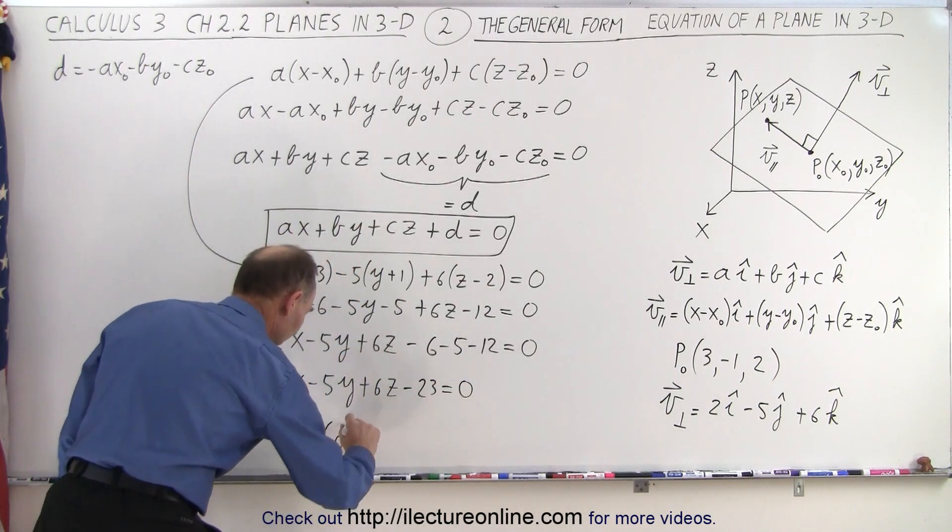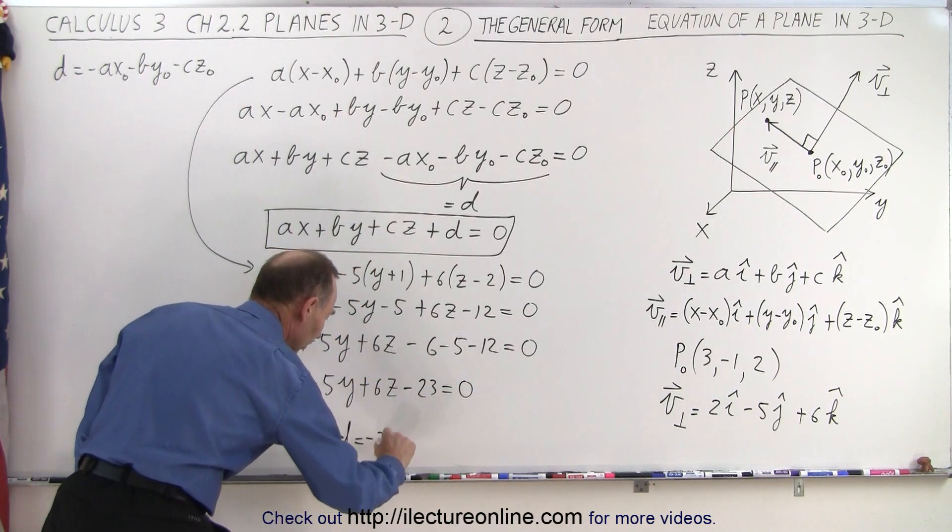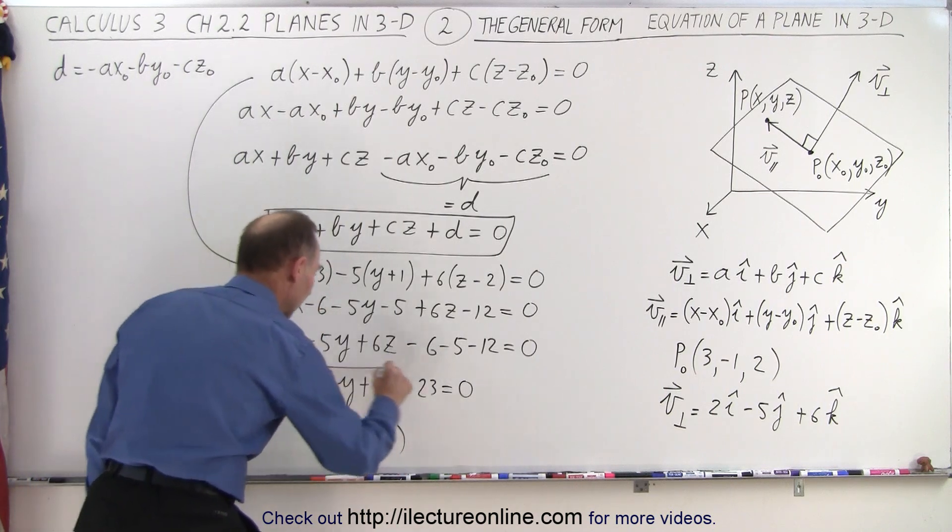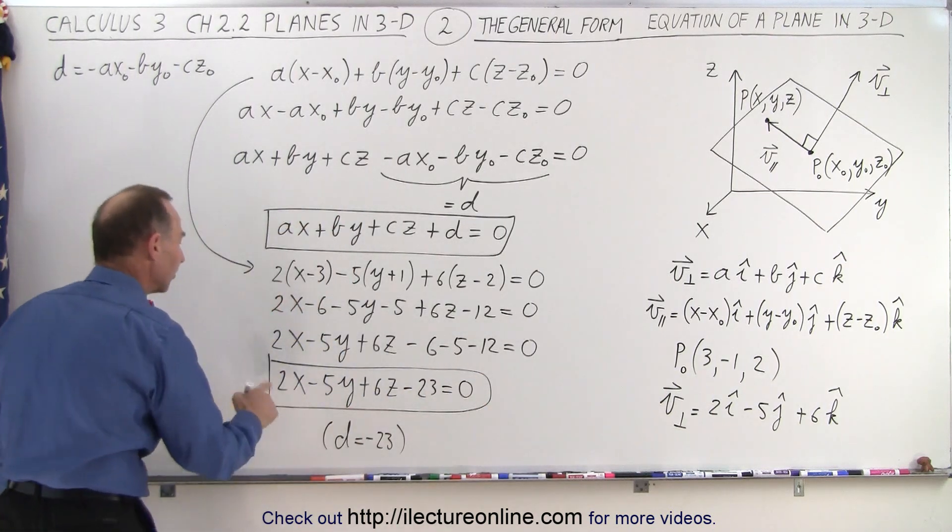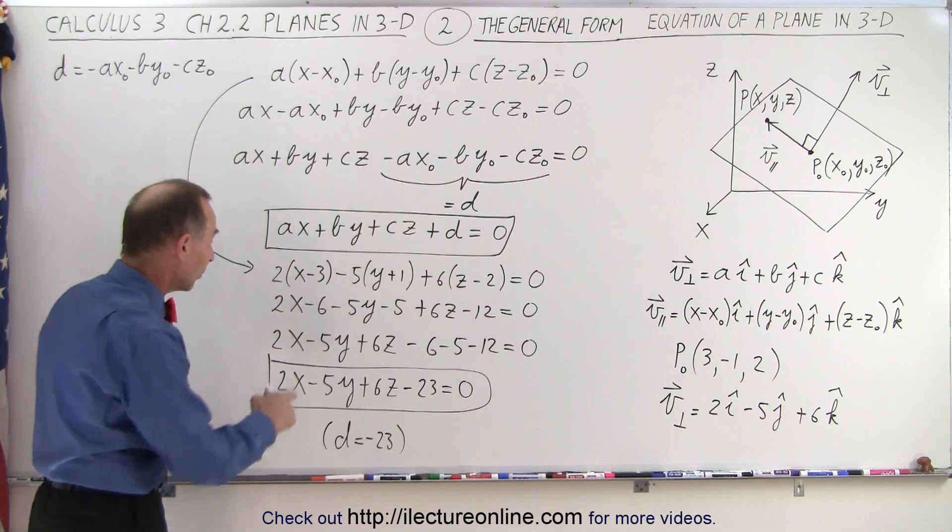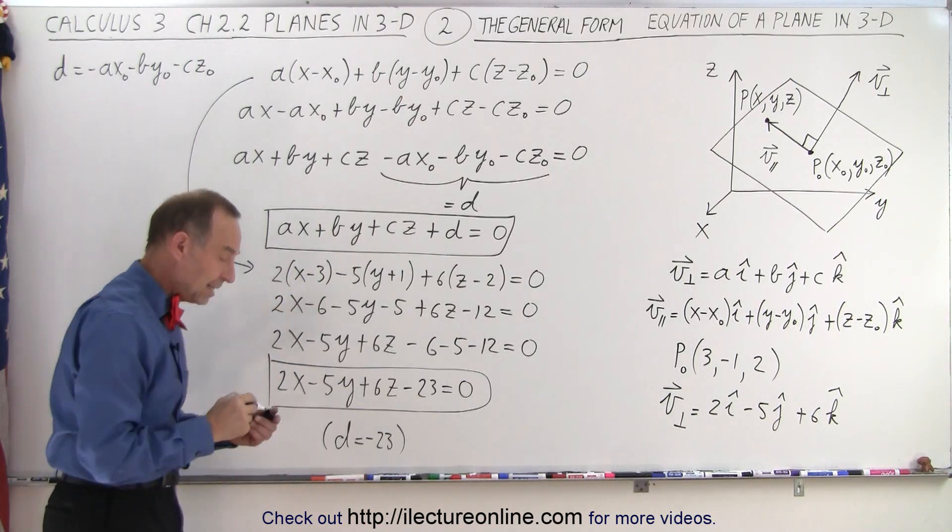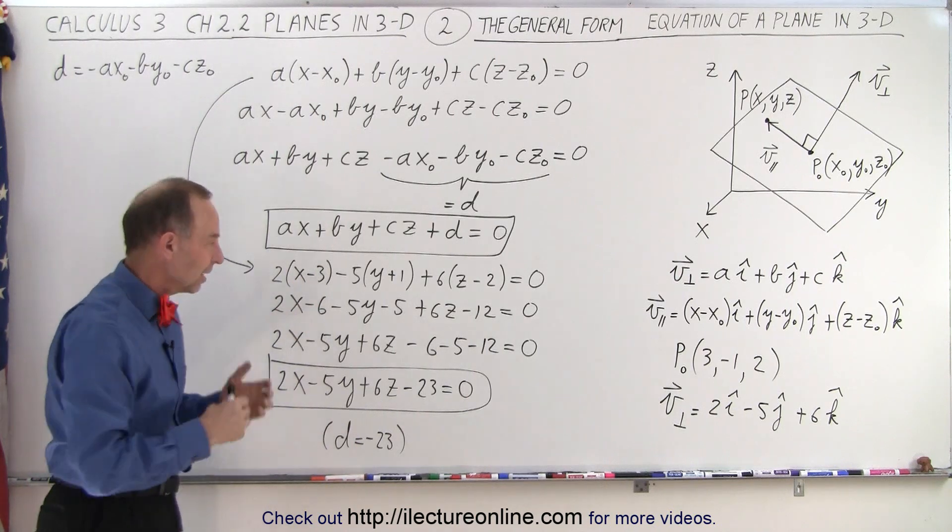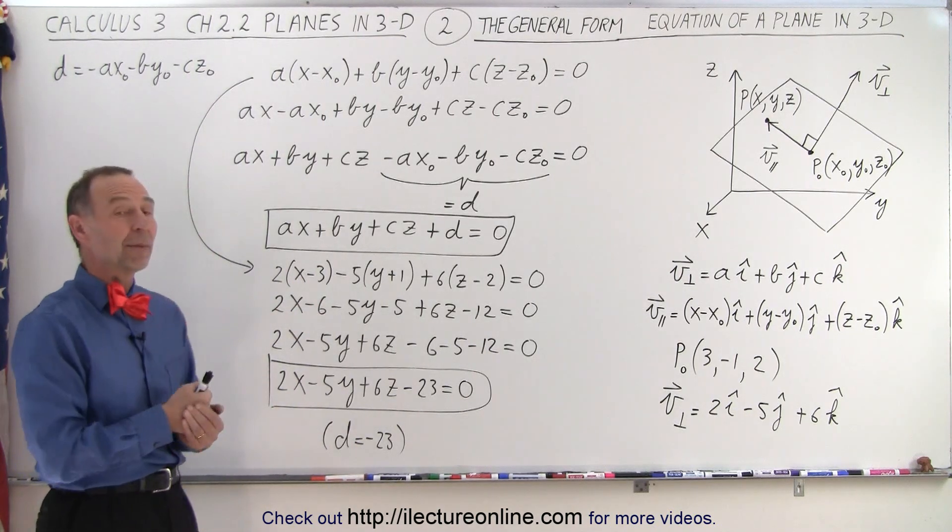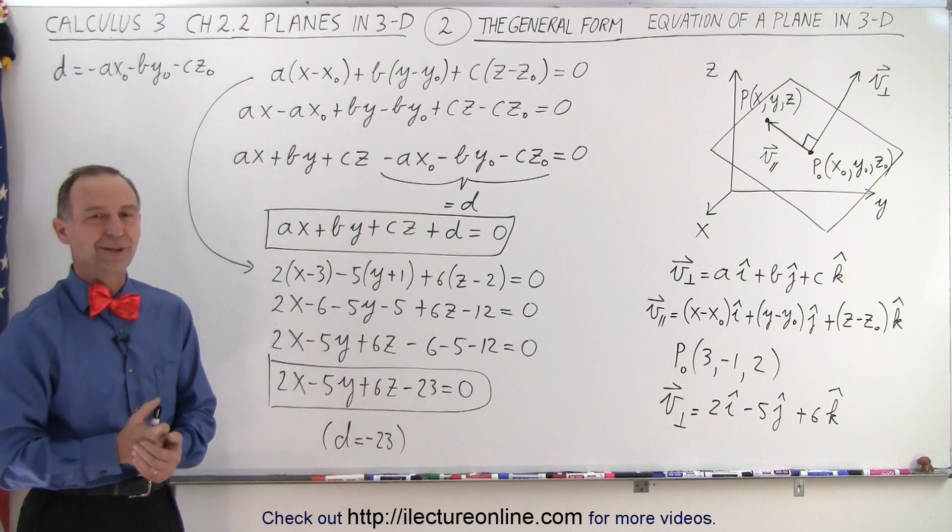So in this case, we realize that D is equal to minus 23. That's the same equation that we found previously, which is right here in the point-normal form, and we wrote it in the general form of the plane, the equation of the plane in three dimensions, and that is how it's done.